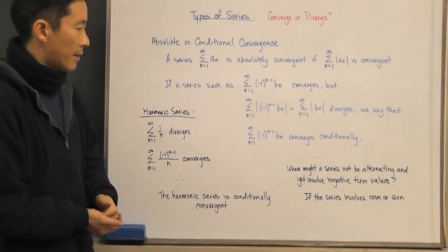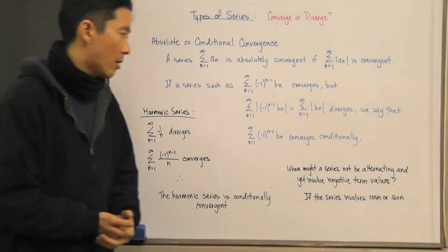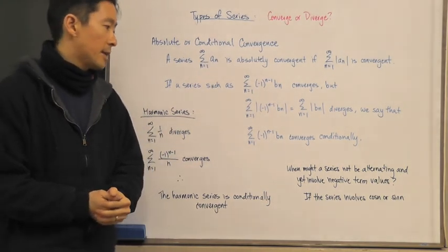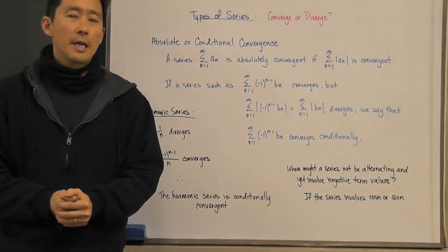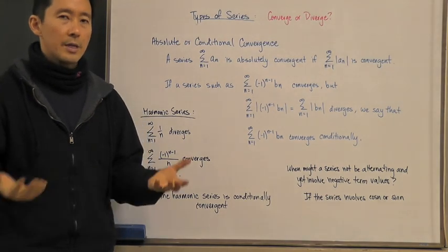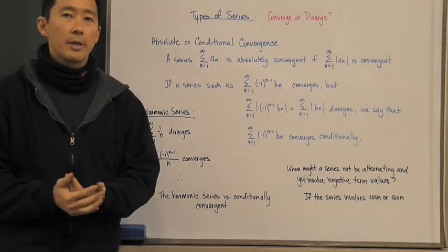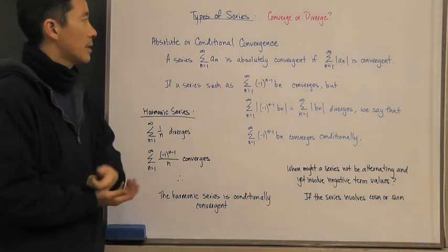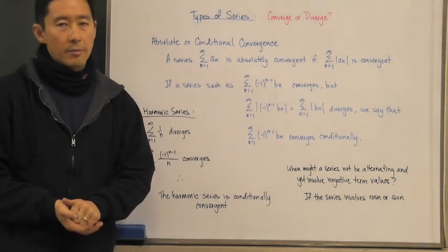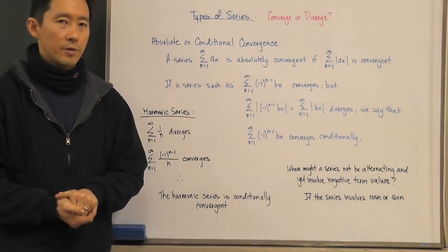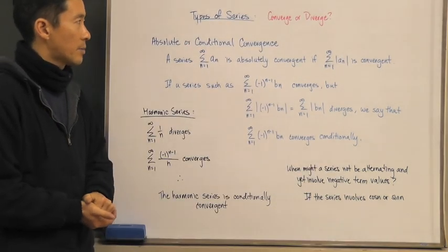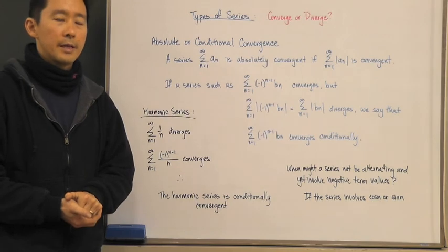When might a series involve negative terms without being alternating? The answer is if the series involves cosine or sine. If you see cosine or sine within your series and know it converges, you need to determine whether it is absolutely convergent or conditionally convergent by taking the absolute value and checking whether that converges or diverges.